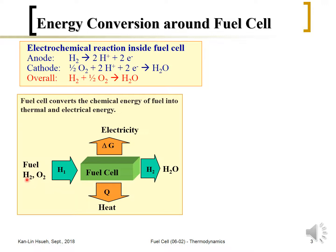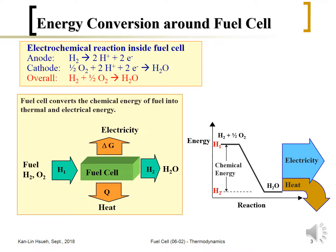At the beginning, the hydrogen and oxygen have a certain amount of chemical energy, which we call H1. When they are fed into the fuel cell, the electrochemical reaction converts some energy into delta G — the electricity — and some into Q, the heat released. The exhaust will be H₂O with energy called H2. So the chemical energy drops from H1 to H2, and the difference is released as electricity and heat.